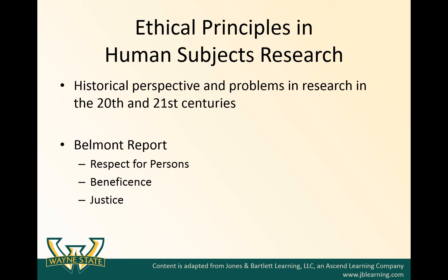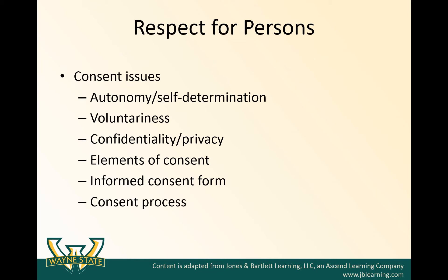There are several different ethical principles in human subjects research that we should consider, and most of these guidelines, protocols, and regulations have been a result of problems in research in the past. One such guideline is the Belmont Report, and it covers three primary areas of consideration: respect for persons, beneficence, and justice.